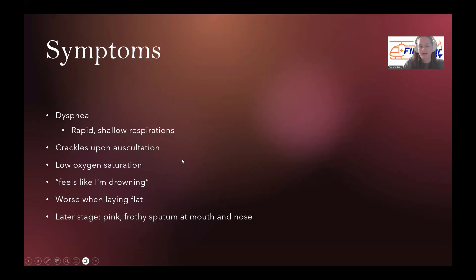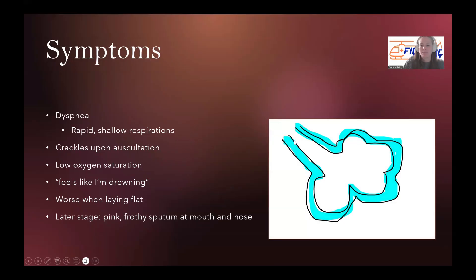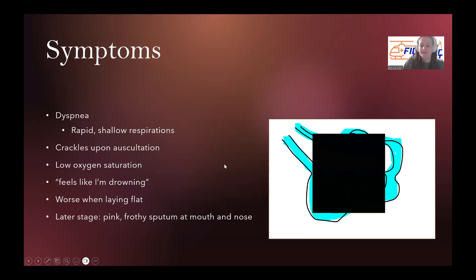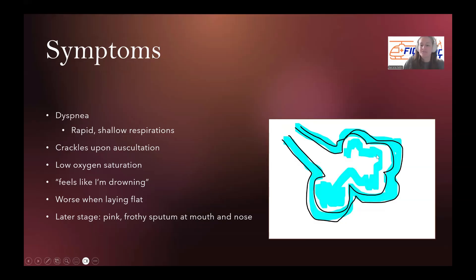In later stage pulmonary edema, we'll start to see this pink, frothy sputum at the mouth and nose. Remember, we have this fluid all surrounding the alveoli, out in the tissue of the alveoli. But in later stages, it progresses. That fluid will actually, as it gets under high pressure and there's nowhere for the fluid to go, it'll actually start to fill the alveoli. So then when the person's trying to exhale, they'll have this pink, frothy sputum that is basically because of that fluid that's gotten into the alveoli. When you're thinking of distinguishing between different respiratory emergencies, pink, frothy sputum at the mouth and or the nose is a telltale sign of pulmonary edema.